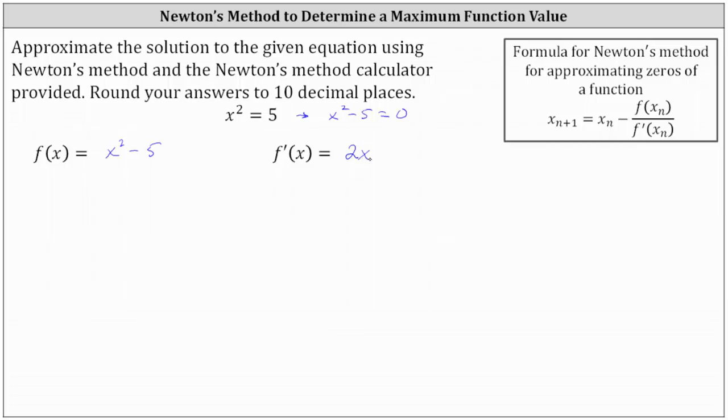Now there is one more thing you have to be careful about here. If we take a look at this equation we know there is going to be a positive and negative solution. So what we'll do is use Newton's method to approximate the positive solution to 10 decimal places, and then from there we can determine the corresponding negative solution.